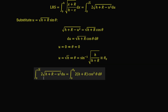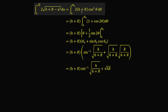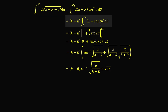Putting all of those things together, the integral from 0 to √h of 2√(h + r − u²) du equals the integral from 0 to θ₀ of 2(h + r) cos²θ dθ. This is essentially an integral of cosine squared. To handle this, we use the double angle formula: pulling out the constant (h + r), 2cos²θ = 1 + cos 2θ. This is easy to integrate, giving the antiderivative (h + r)(θ + ½ sin 2θ).